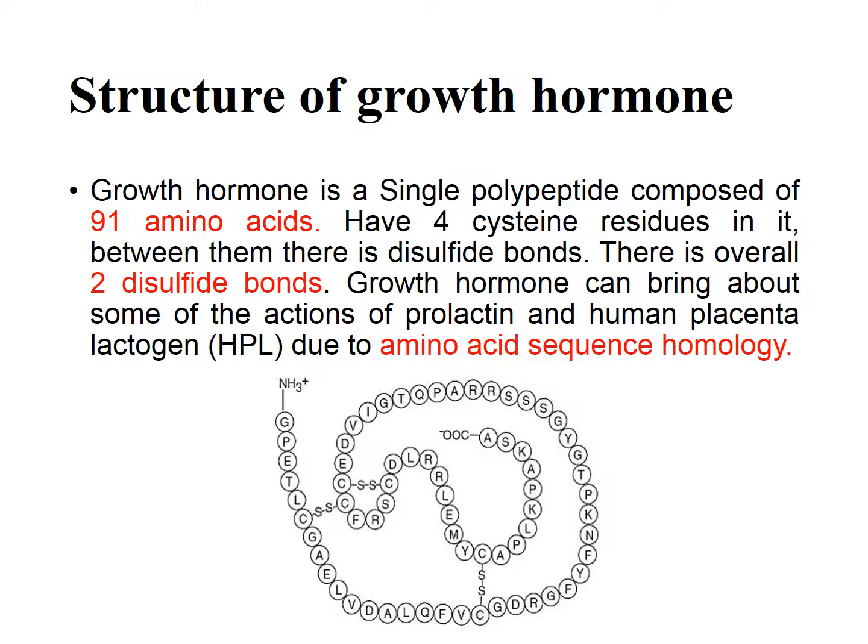Structure of growth hormone: Growth hormone is a single polypeptide composed of 191 amino acids. It has 4 cysteine residues, between which there are disulfide bonds — overall 2 disulfide bonds. Growth hormone can bring about some of the actions of prolactin and human placental lactogen (HPL) due to amino acid sequence homology.